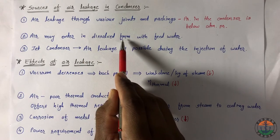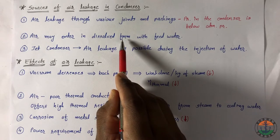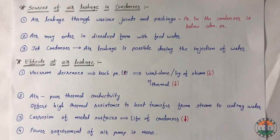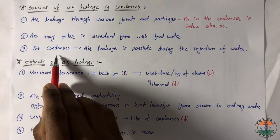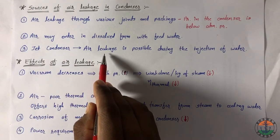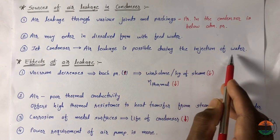The air is liberated in the boiler when steam formation takes place. The same air travels to steam turbine and condenser. In jet condenser, air leakage is possible during injection of water.